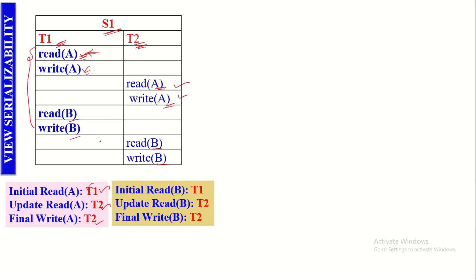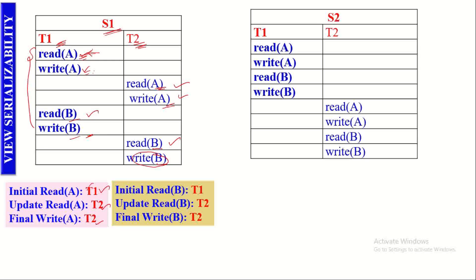Similarly, if we look at data item B: initial read is done by T1, update read is done by T2, and final write is done by T2. So now we have to do the same process of observing initial read, update read, and final write on each data item in the serial schedule of the given non-serial schedule.